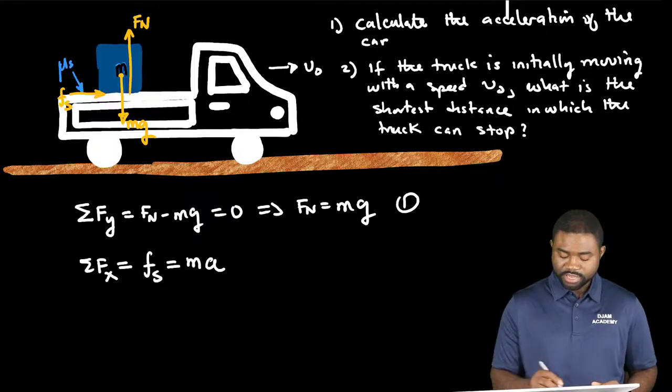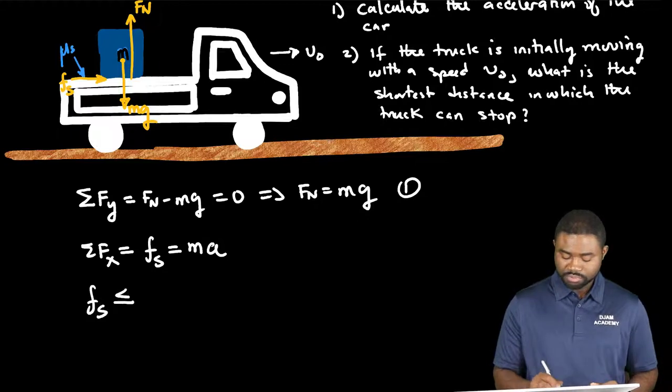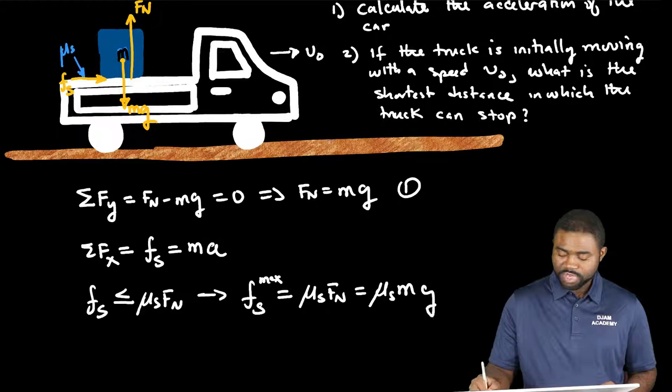This would mean that, remember by definition, Fs is less than or equal to mu s Fn, which means that the maximum static friction sustaining the box forward is equal to mu s Fn, which is equal to mu s mg.